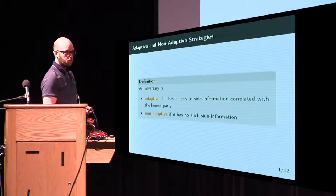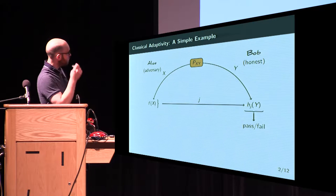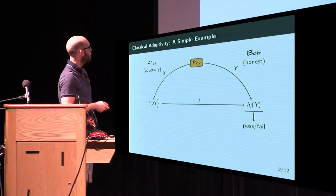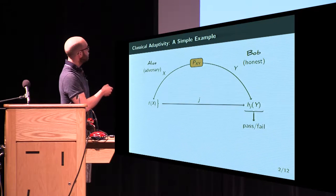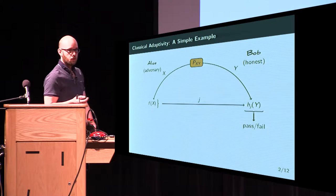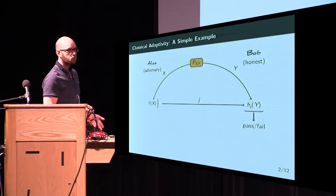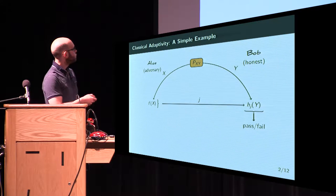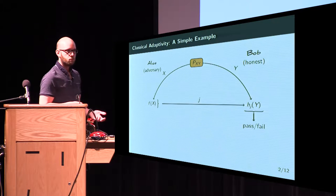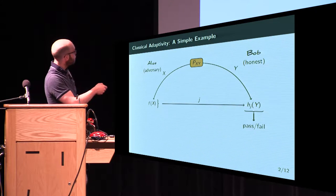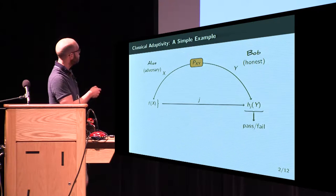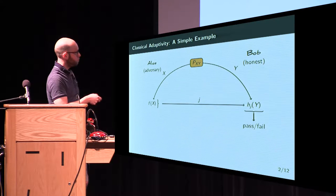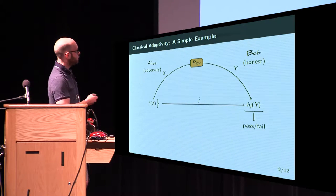I'm going to introduce what I mean by side information with a simple example. You have two players, Alice and Bob, and Alice plays the role of the adversary. They're going to share two random variables. This is a classical case of adaptivity — they share random variables x and y. You can think of y as either the whole memory of the honest participant or some value he wants to keep secret. The correlation between x and y, classically, is described by a joint probability distribution over the possible values. They play a game where the goal is for Alice to produce a j that will determine some function that Bob will apply on his value, and Bob will either output pass or fail.